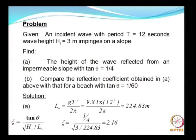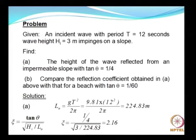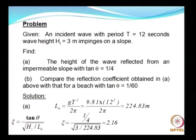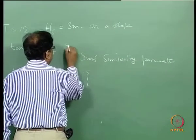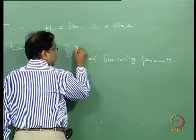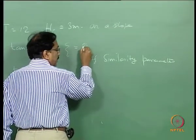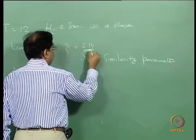For the first case with wave period 12 seconds, you calculate the deep water wavelength, and the surf similarity parameter works out to 2.16.